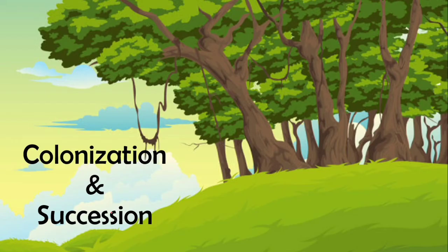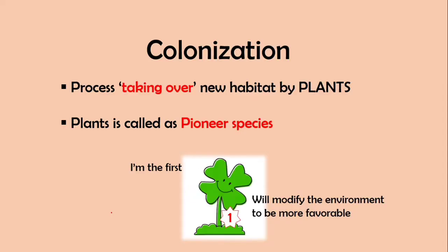We proceed with colonization and succession. Colonization is the process taking over new habitats by plant. Bear in mind, taking over new habitats. And colonization and succession hanya untuk plant sahaja. For the plants that carry out this process of taking over new habitats, this plant we call it as pioneer species.